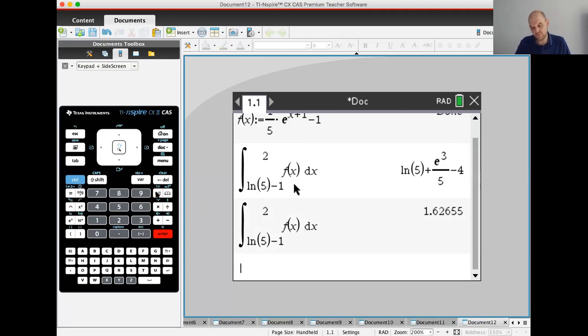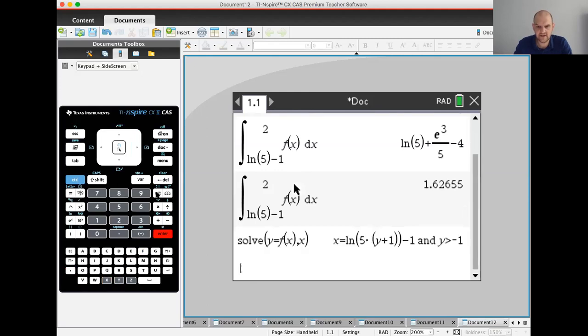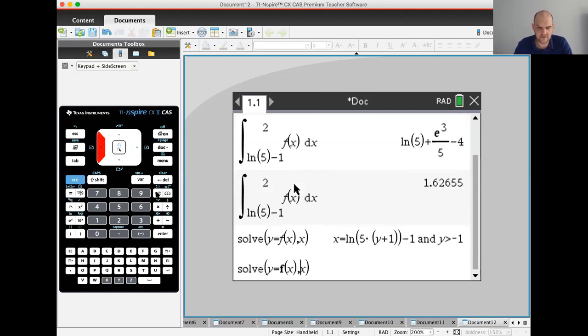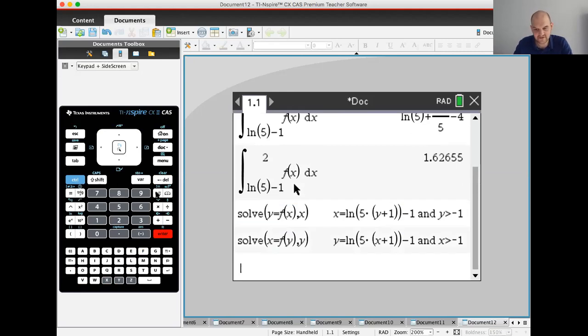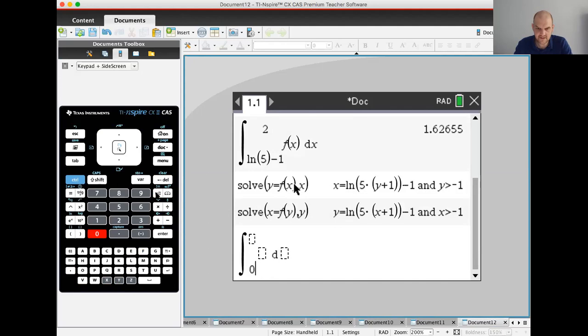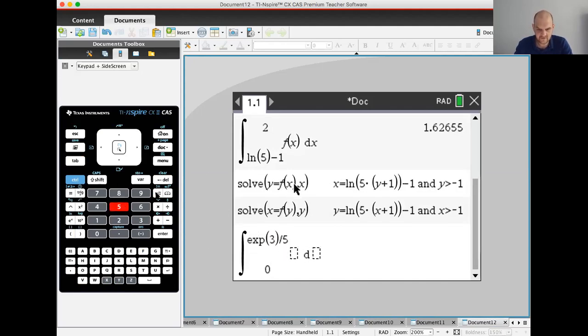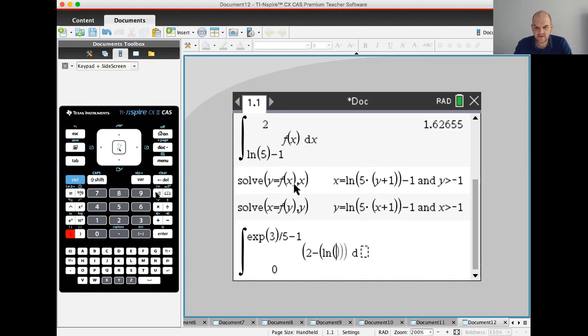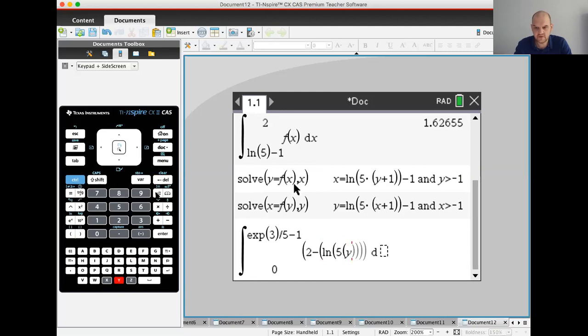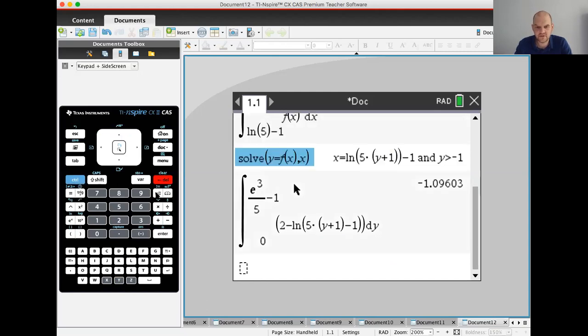1.627. So now, the moment of truth. One thing you can do is you can always do solve y equals f of x for x. Or even better, is to solve x equals f of y for y. And then you'll get your function. So that is the function that we wanted. That's what we're using. So I think I need to do the integral from 0 to e cubed over 5 minus 1. This seems ridiculous. 2 minus the quantity natural log of 5, the quantity y plus 1, minus 1. And then dy. Totally wrong. Awesome.